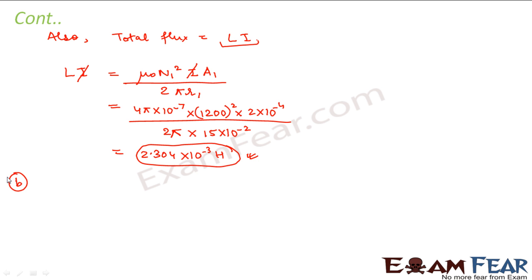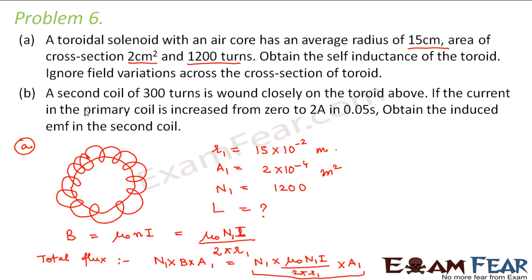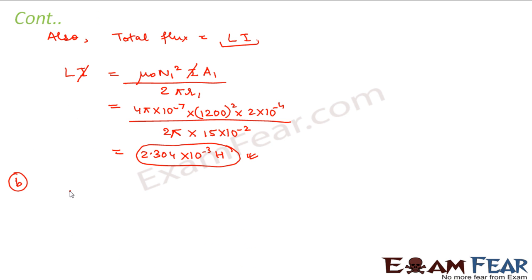Now let us look at the second part. The second part says that a second coil of 300 turns is wound closely on the toroid above — meaning on top of this toroid there is another coil wound closely. If the current in the primary coil is increased from 0 to 2 amperes in 0.05 seconds, obtain the induced EMF in the second coil. So this is talking about mutual inductance now.